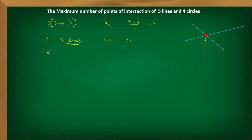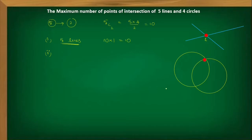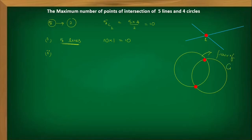Now the second case: suppose you have two circles. If two circles intersect, how many points of intersection will you get? Two points of intersection. Whenever two circles intersect, we will have two points of intersection. So each pair of circles contributes two points of intersection.